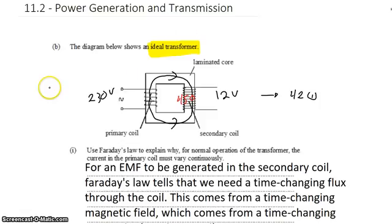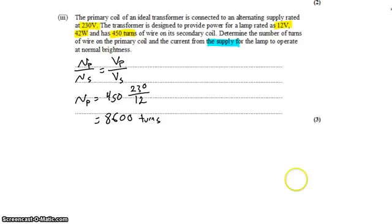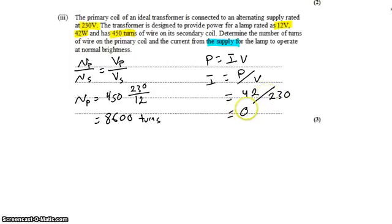So we can say that power equals current times voltage. Knowing the voltage and the power, we can get the current. So we'll say P equals IV, I equals P over V, 42 watts of power divided by 230 volts gives us 0.18 amps into the primary side.